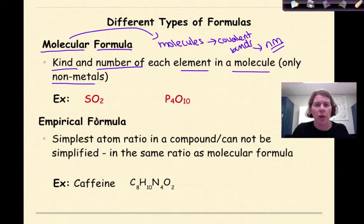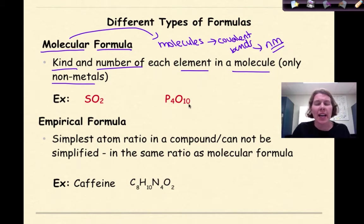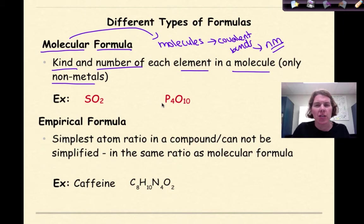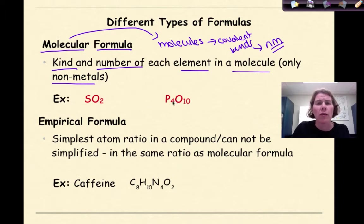Here are two examples: sulfur dioxide, SO2, and tetraphosphorus decoxide. We'll go over how to name these in future videos. Both of these would be considered molecular formulas because they are made of non-metals and are held together by covalent bonds.